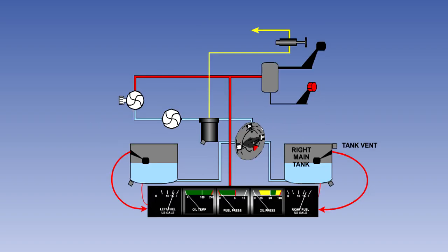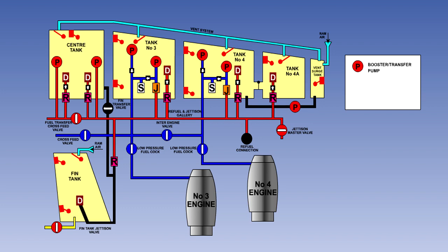Fuel tanks also incorporate vents, a gauging system, water drains, and filler caps. In larger aircraft the tanks will also have booster pumps, high and low level float switches, and pressure refueling valves. These components will all be explained in detail in later lessons.